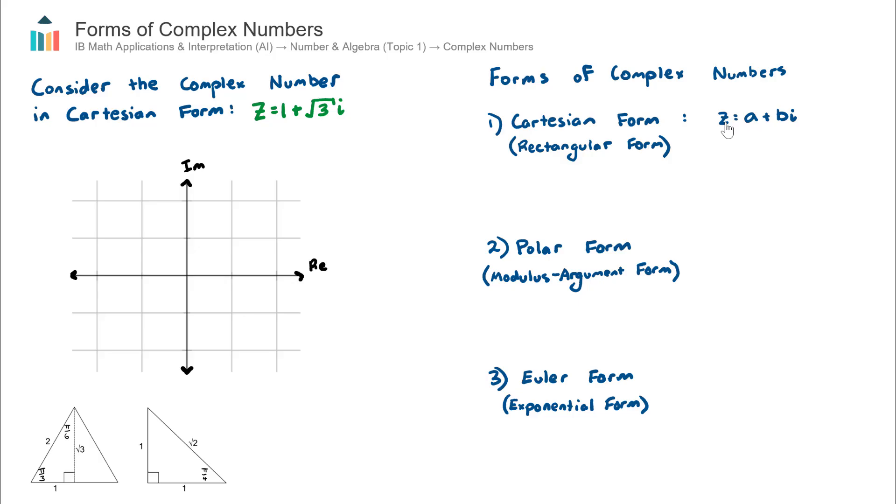The form of that is A plus BI, where A is the real component and B is the imaginary component of our complex number. The second form is polar form, which is also known as modulus argument form. And the third form is Euler form, which is also known as exponential form.